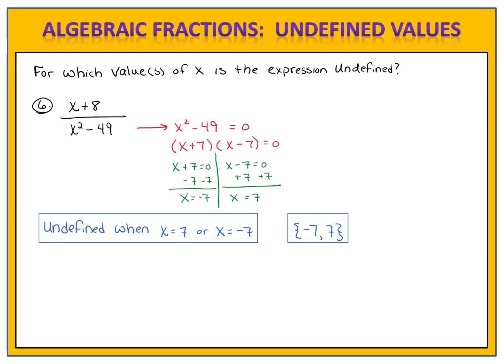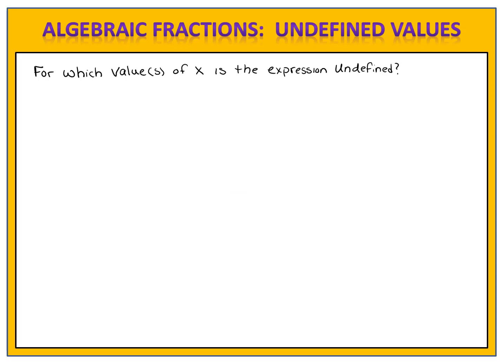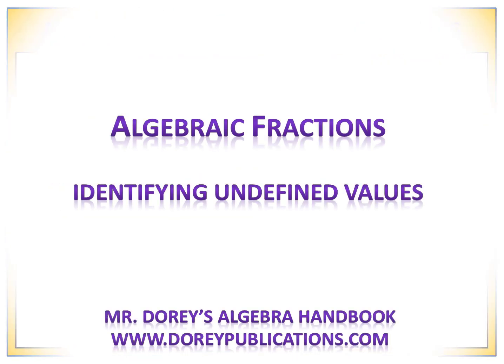Something really cool happens here. Notice that we have both positive and negative 7 at the same time. We can consolidate that into a single statement — we can write positive and negative 7 together as plus or minus 7 with a plus-or-minus symbol, which denotes positive 7 and negative 7. So we can say this is undefined when x equals plus or minus 7. And that's everything you need to know to get started working with algebraic fractions. You now know how to identify undefined values, and you're ready to go.